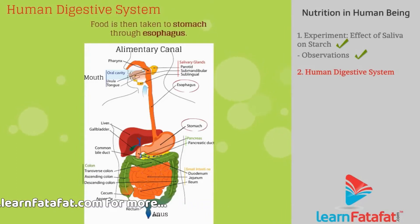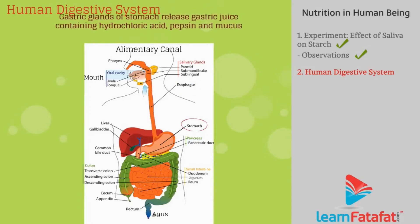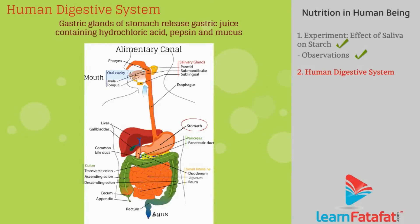Food is then taken to the stomach through the esophagus. Gastric glands of the stomach release gastric juice containing hydrochloric acid, pepsin, and mucus.